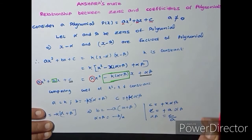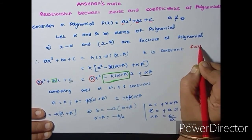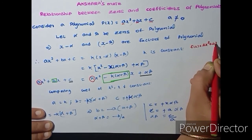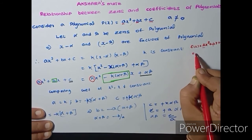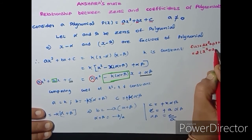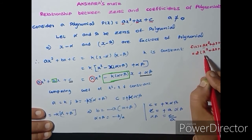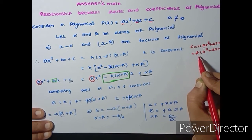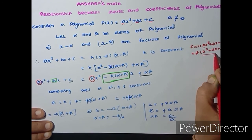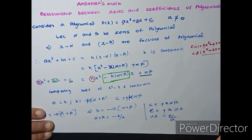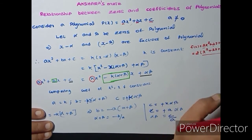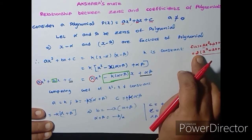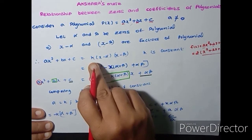Why are we putting this K? Assume F(x) = 2x² + 4x + 6. Everywhere this 2 is common, so I can write it as 2(x² + 2x + 3). It is not necessary to take this 2 for factorization — I only need to factorize x² + 2x + 3. So whenever writing a polynomial, you must include K. If K turns out to be 1, no problem; otherwise you have to include that number.